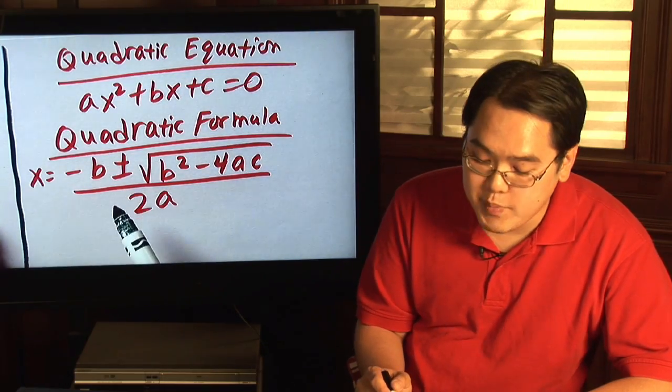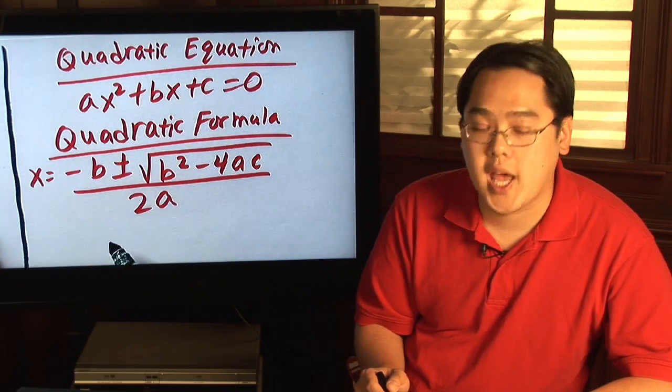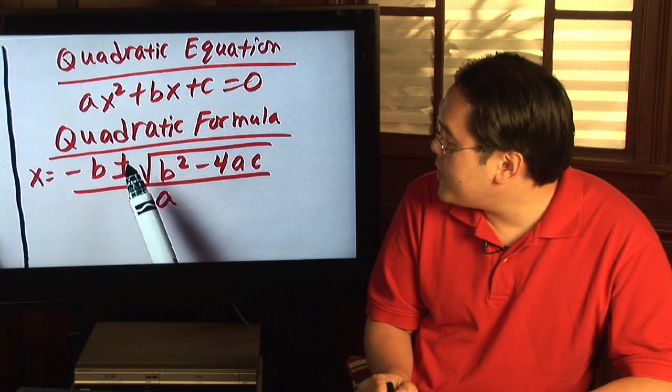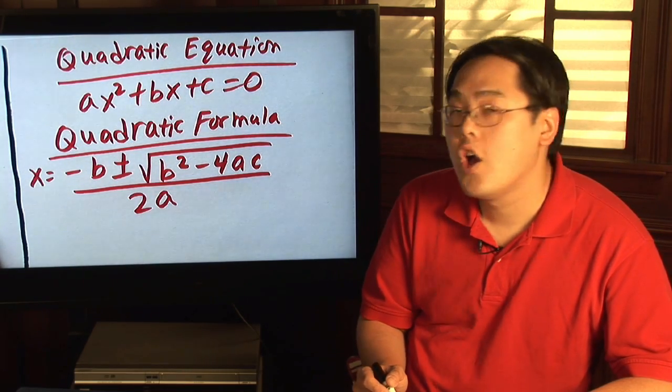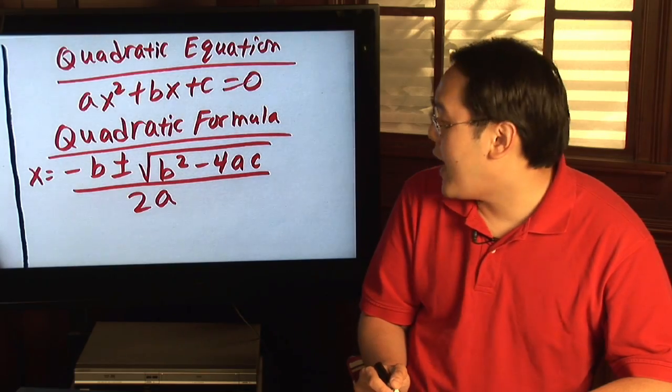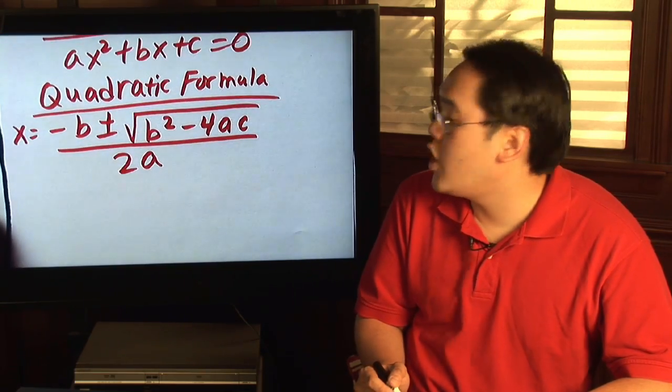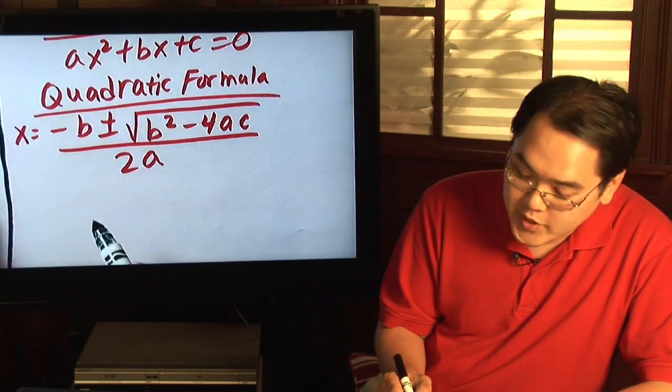And to solve it, to get x by itself, this quadratic formula came about. It's negative b plus or minus square root of b squared minus 4ac, all that over 2a. Here's an example of as to how you solve this particular equation using this formula.